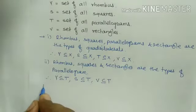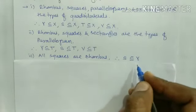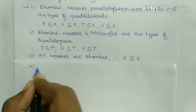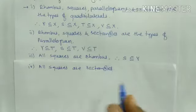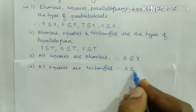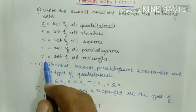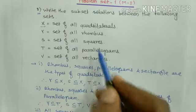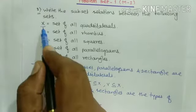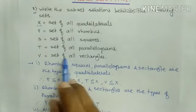Now all squares are rhombus, therefore S is the subset of Y. All squares are rectangles, therefore S is the subset of V also. Now the next question: which set can you take as a universal set considering the given sets? Here, rhombus, squares, parallelograms, and rectangles are all quadrilaterals, that's why considering these sets, X is the universal set.